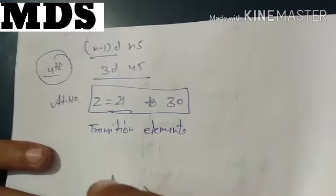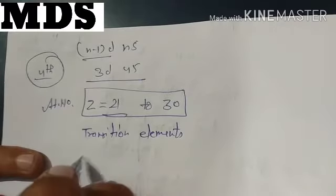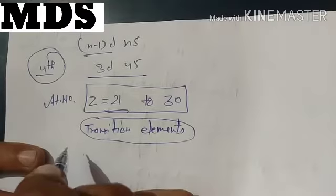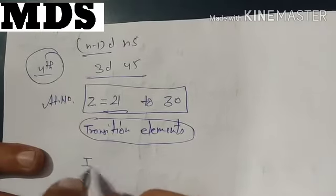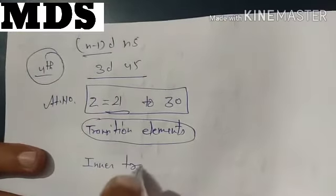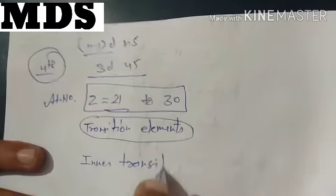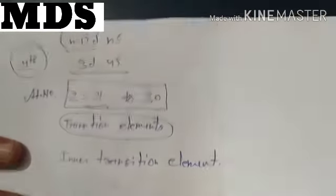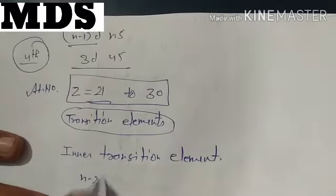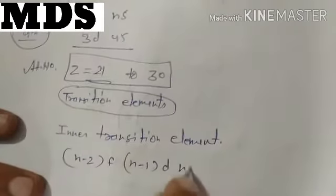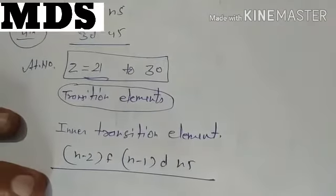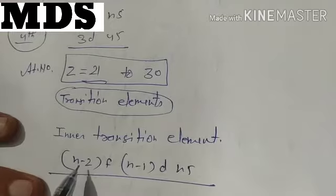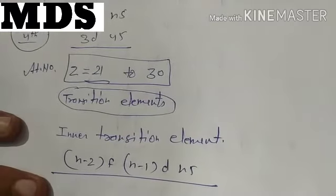There are also some elements picked up from the sixth and seventh periods, and those elements are known as inner transition elements. In the case of the f orbital, you will meet the configuration n−2 f, n−1 d, and ns, and the f sub-shell gets filled there.